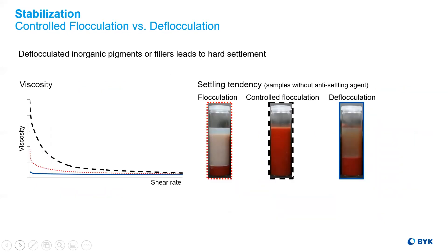This is important to understand when evaluating the settling properties of pigmented coatings. Flocculated pigments have a soft settling tendency, depending upon the pigment size and coating medium.